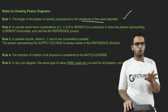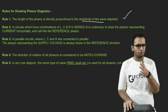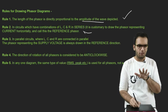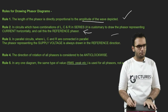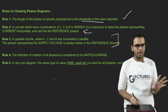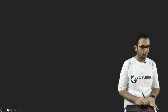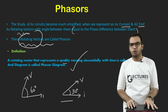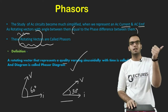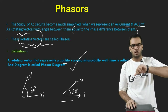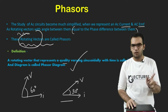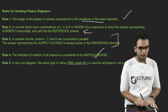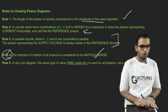Rule 2 and 3: In circuits with LCR in series, it is customary to draw the Phasor representing current horizontally and call this the reference Phasor. In parallel circuits, voltage is the reference. Rule 4: the direction of rotation is considered anti-clockwise. Since Phasors are rotating vectors, the fixed direction in which you rotate them is the anti-clockwise direction only.